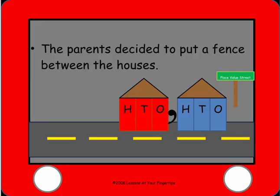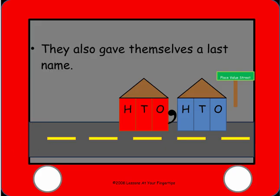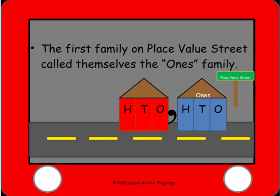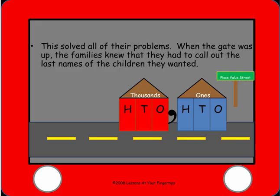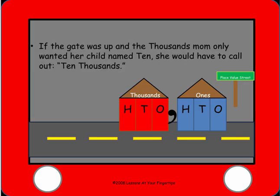The parents decided to put a fence between the houses, and they also gave themselves a last name. The first family on Place Value Street called themselves the ones family. The second family called themselves the thousands family. Now this solved all of their problems. When the gate was up, the families knew they had to call out the last names of the children they wanted. If the gate was up and the thousands mom only wanted her child named ten, she would have to call out ten thousands.